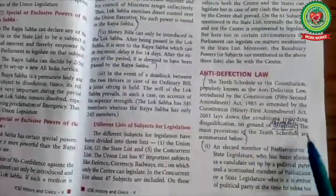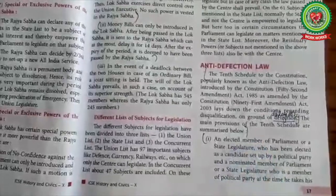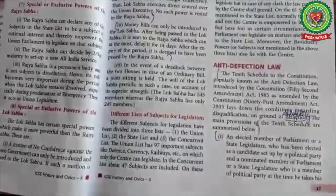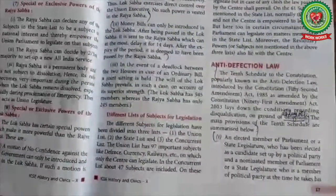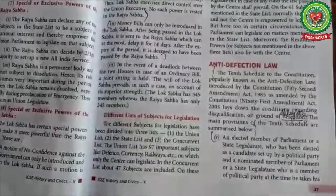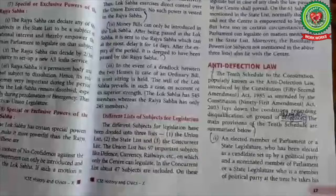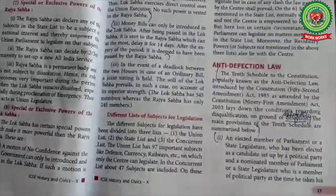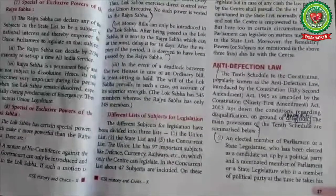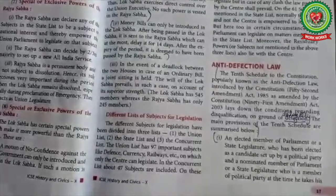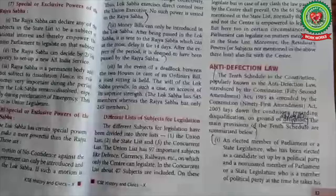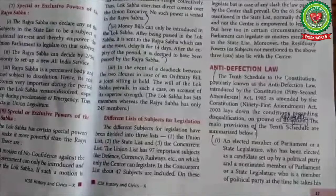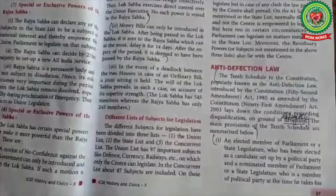The main provisions of the 10th schedule are summarized below. The anti-defection law in India, also known as the 10th schedule to the Indian constitution, was enacted to address the perceived problem of instability caused by democratically elected legislators shifting commitments from the parties they supported at the time of election, or disobeying their party's decision at critical times. The 10th schedule was inserted in the constitution in 1985 by the 52nd Amendment Act, as amended by the 91st Amendment Act in 2003.